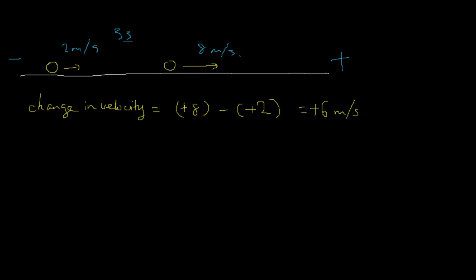The difference is also positive, so the change in velocity is also directed to the right. This looks simple because since both velocities are going in the same direction, it appears we're just subtracting the two numbers — taking the bigger number and subtracting the smaller one.